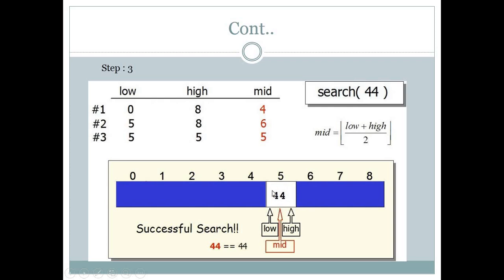Now we check whether the mid value equals our desired value. The value at mid index 5 is 44, and our desired value is also 44 — so we have found it! This is how the binary search algorithm works. Our desired value 44 is found at index 5 of the array.